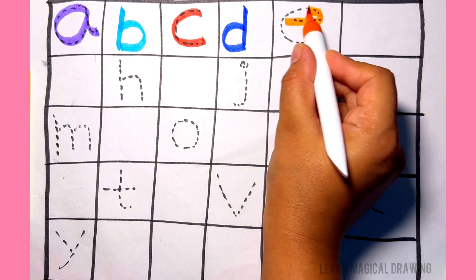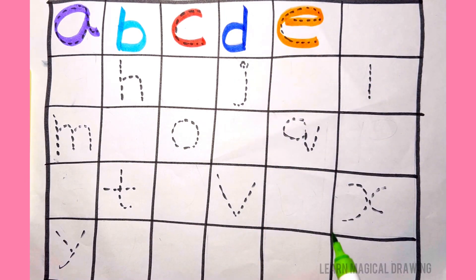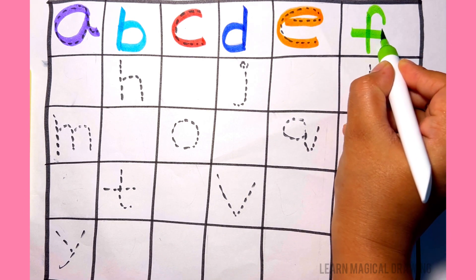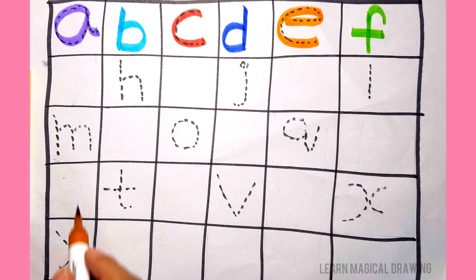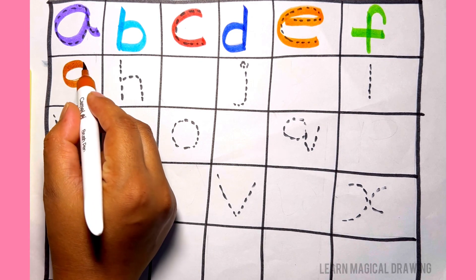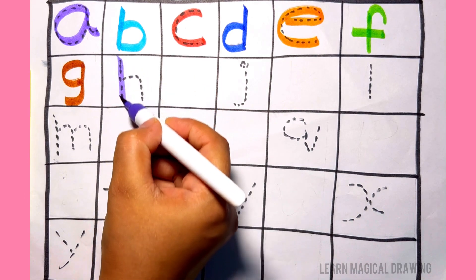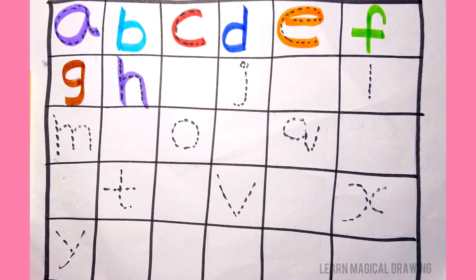E. E for Elephant. F. F for Finger. G. G for Goat. H. H for Hand.